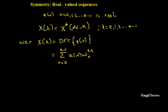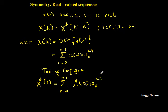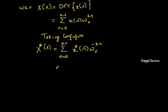Looking at the definition, the right-hand side has a star, which is the complex conjugate. Taking complex conjugates on both sides: X*(k) equals summation n equal to 0 to N minus 1 of x(n) times W_N to the power k·n, whole to the power star. Taking the conjugate inside, x(n) becomes x*(n) and W_N to the power k·n becomes W_N to the power minus k·n, since the conjugate of a complex exponential negates the exponent.